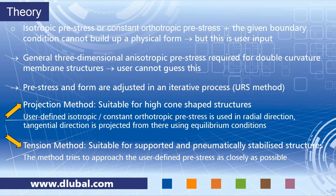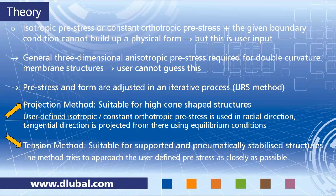There are some difficulties with defining the pre-stress. A double-curvature membrane structure — a three-dimensional structure bent in all directions — needs a different pre-stress definition at each point of the structure. A general three-dimensional anisotropic pre-stress would be required, but that's not something you can easily define. As a user, you can only know isotropic or orthotropic pre-stress — you cannot estimate a general three-dimensional pre-stress.